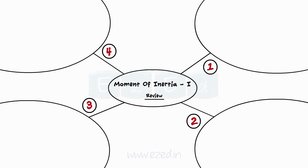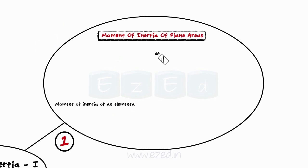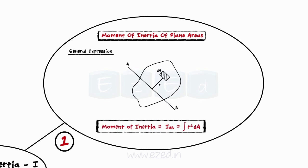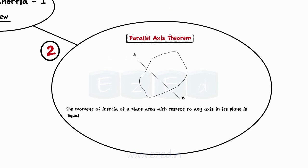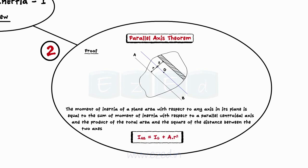Let us have a quick review of what we have studied in this lecture. First, we learnt about moment of inertia of a plane area — the product of the area of the element and the square of its distance from the axis, called the second moment of area. Then, we derived the general expression for moment of inertia of plane areas. We also learnt the parallel axis theorem: IAB equals IG plus AR², which states that the moment of inertia with respect to any axis equals the sum of the moment of inertia about a parallel centroidal axis and the product of total area and the square of the distance between the two axes.